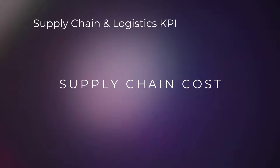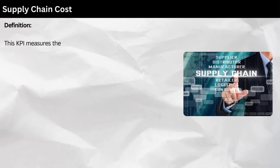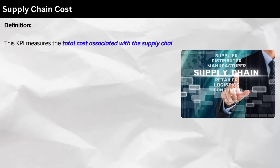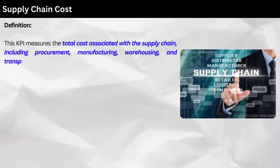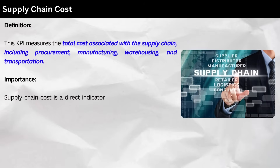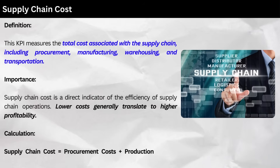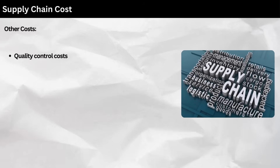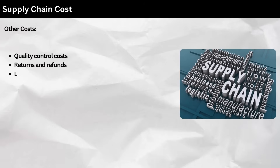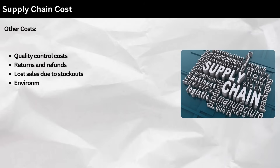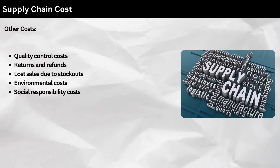5. Supply Chain Cost. Definition: this KPI measures the total cost associated with the supply chain, including procurement, manufacturing, warehousing, and transportation. Importance: supply chain cost is a direct indicator of the efficiency of supply chain operations. Lower costs generally translate to higher profitability. Calculation: as follows. Other costs include quality control costs, returns and refunds, lost sales due to stockouts, environmental costs, and social responsibility costs.